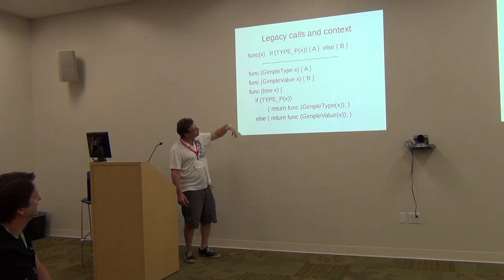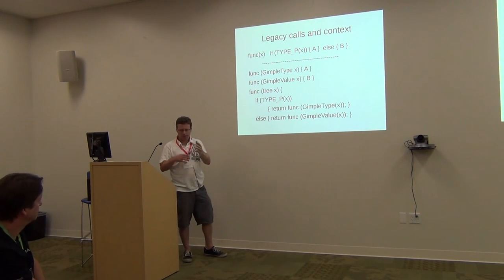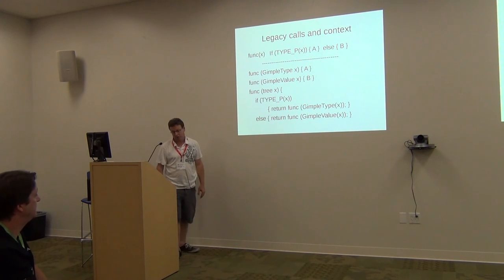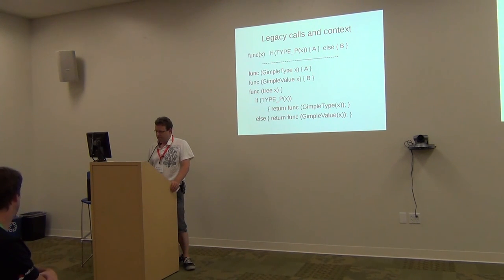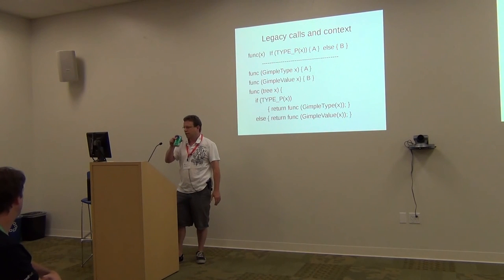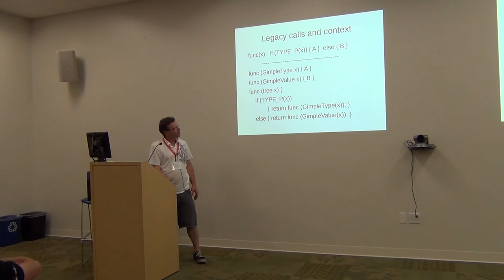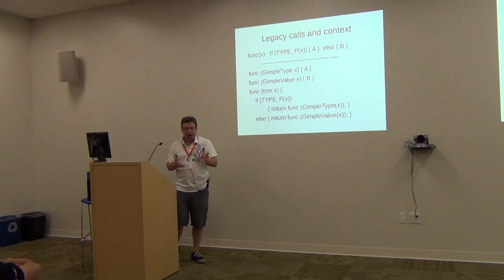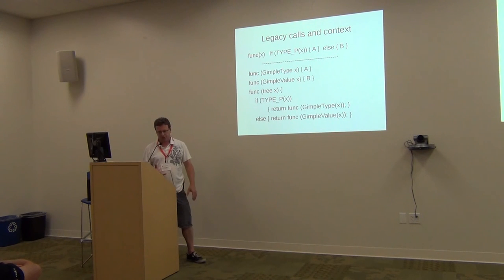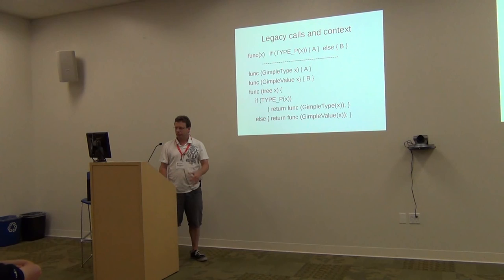This is a very simple example, but when some functions have multiple places where they're doing an if on the tree type, it becomes very difficult to read. This is going to make those functions a lot easier to read. The header file refactoring diagram is actually a gross simplification of what it will actually be, because there will be some cases where you may want to split a header file to have a Gimple version and a tree version. It's going to be a somewhat iterative process to figure that out.